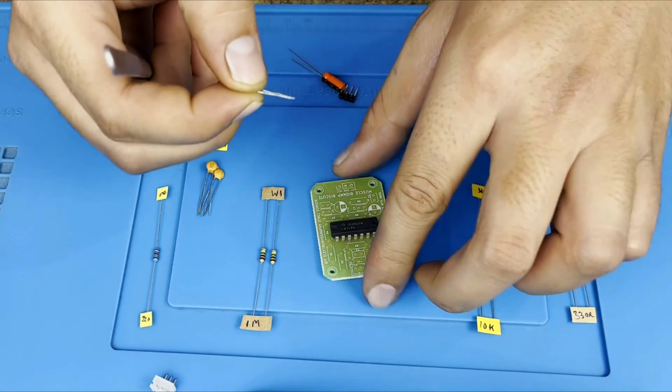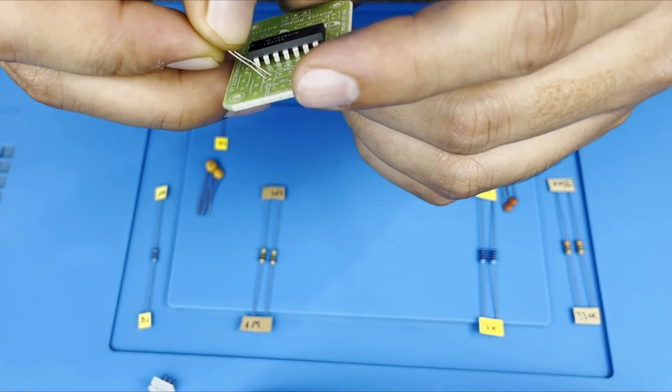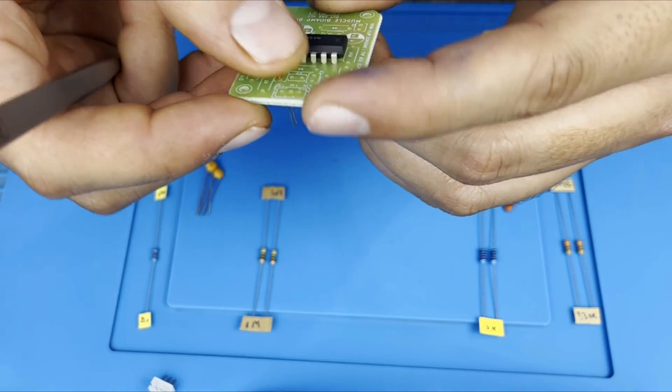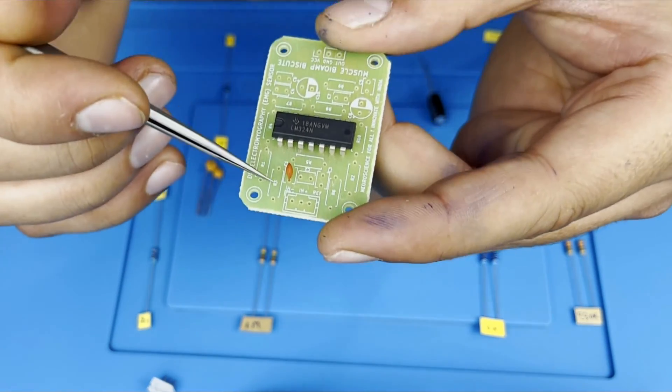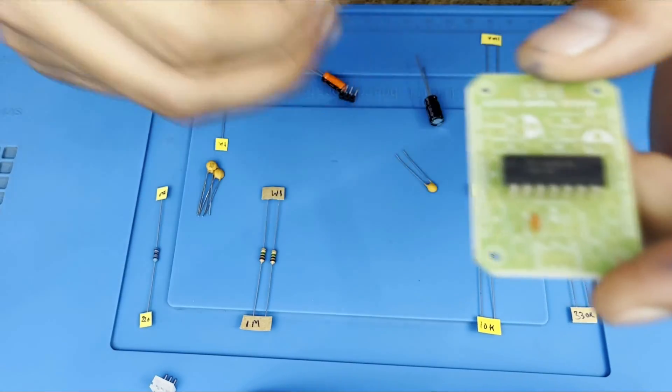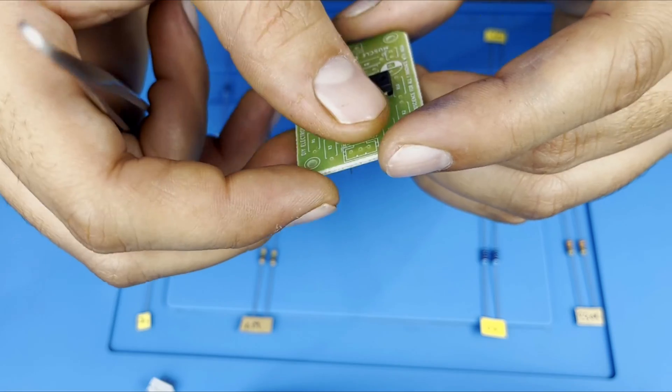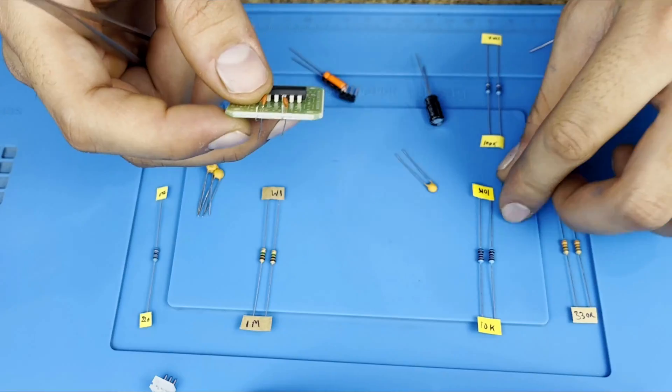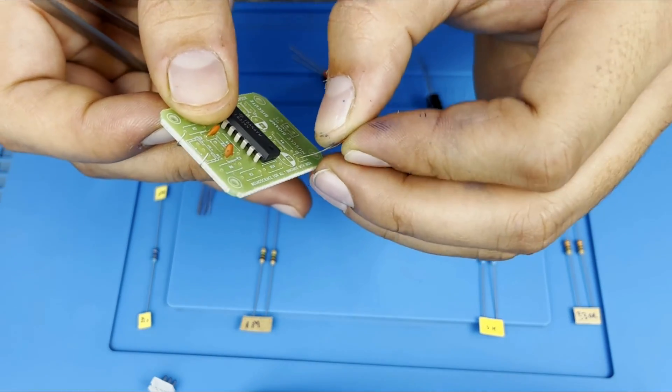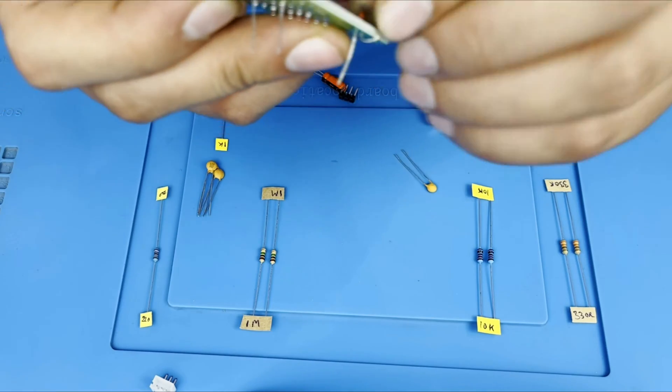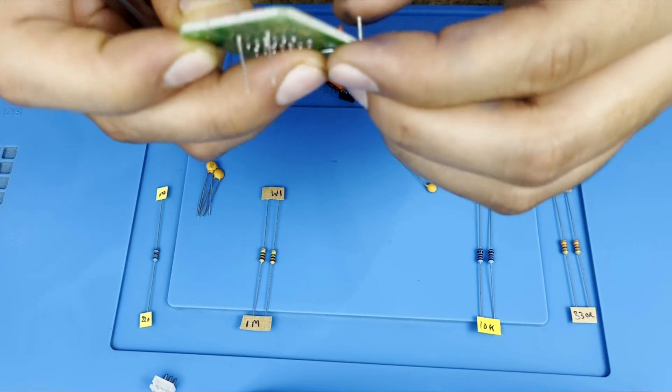There is no positive or negative in the capacitor so we can insert it anyway. C3, C5. I will bend the pins so that the components will not fall from the PCB while soldering.